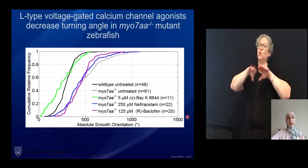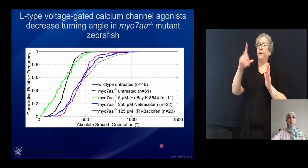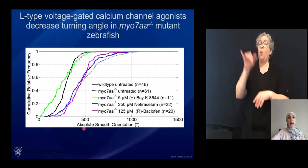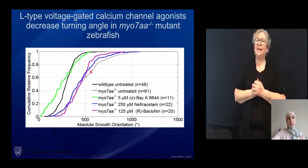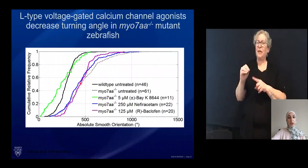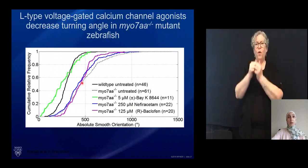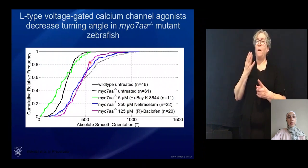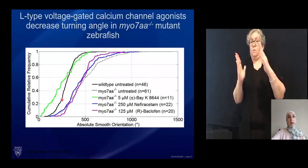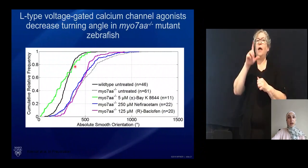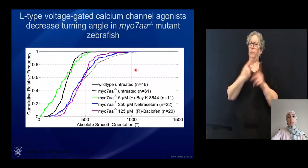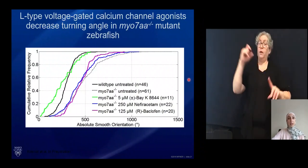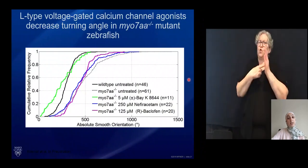We also assessed swimming behavior upon incubation with the three drugs, displaying turning angles on the x-axis and cumulative relative frequency on the y-axis. The untreated myo-7a mutants show 50% of turning angles near 500 degrees. Treatment with nephrosetum and R-baclofen moved the curve modestly closer to wild type, while plus-minus BK produced a very robust shift, nearly overlapping with wild type turning angles. This demonstrates that improvements in synaptic elements of the hair cell are also manifesting in the swimming behavior of these animals upon treatment.